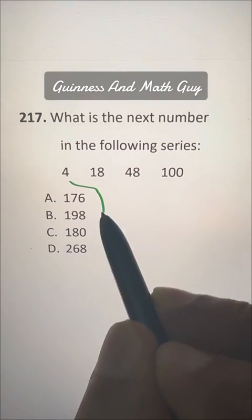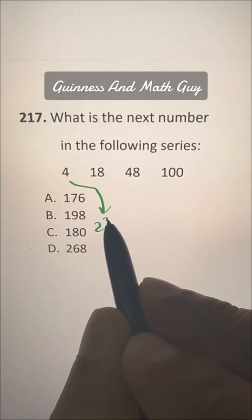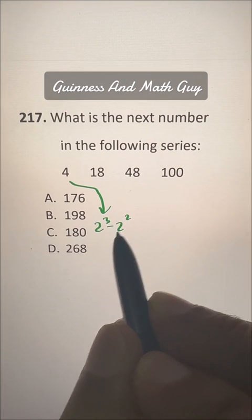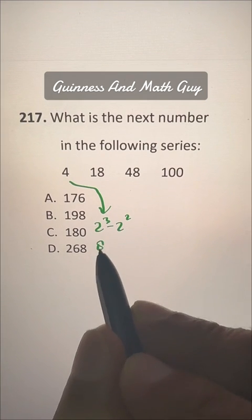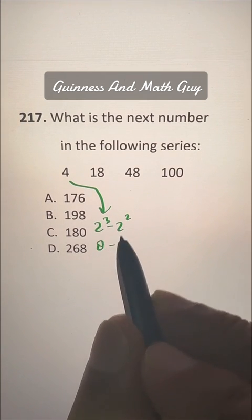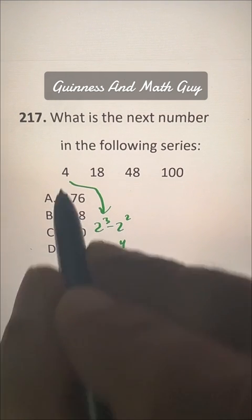This 4 is 2 cubed minus 2 squared. So 2 cubed is 8 and 2 squared is 4. 8 minus 4 is 4.